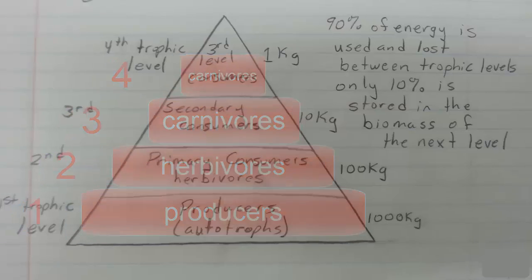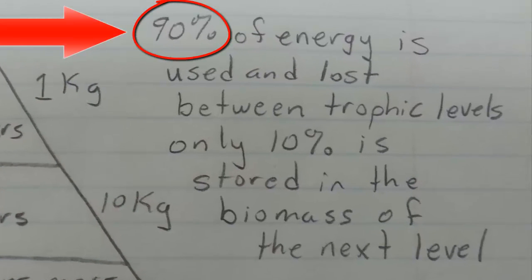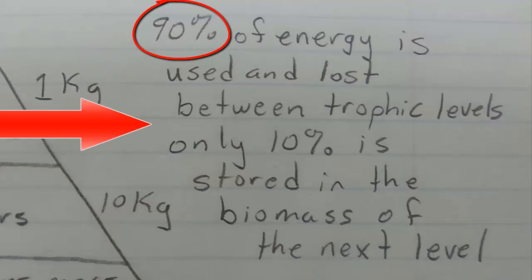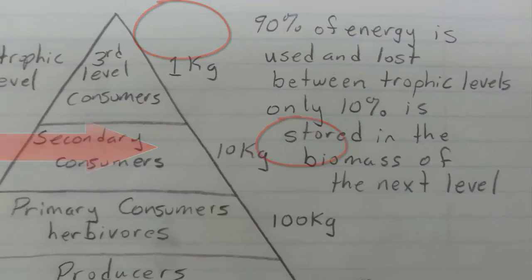The thing to remember about energy as it flows through an ecosystem is that 90% of the energy is used and lost between trophic levels. Only 10% is stored in the biomass of the next level.